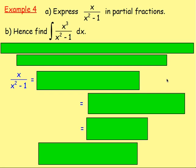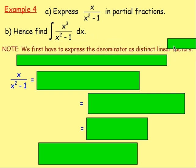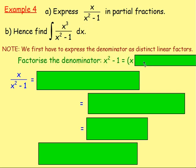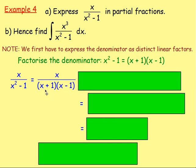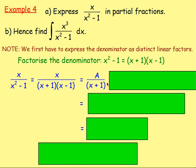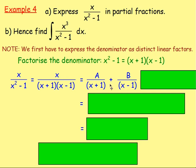Example 4: express x over x squared take away 1 in partial fractions, and hence find the integral of x cubed over x squared take away 1. First, we need to write x over x squared minus 1 in partial fractions. You have to factorize the denominator — we need distinct linear factors. Factorizing x squared take away 1 is just difference of two squares: x plus 1 times x take away 1. So x over x squared take away 1 equals x over (x plus 1)(x take away 1), which we split as A over x plus 1 plus B over x take away 1. If you get it back to front it makes no difference — you should still get the same answer.